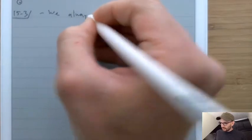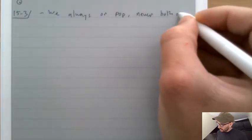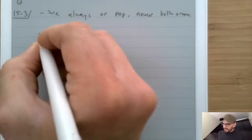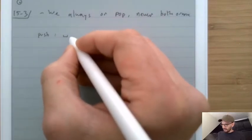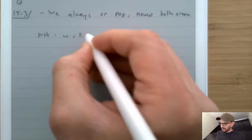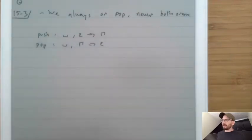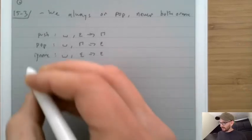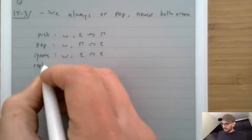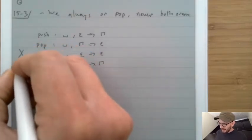The other assumption is that we always push or pop — never both or none. Our machines are allowed to push (sigma, epsilon → something in gamma), allowed to pop (sigma, gamma → epsilon), but we're saying that ignore (sigma, epsilon → epsilon) and replace (gamma → gamma) are not allowed.